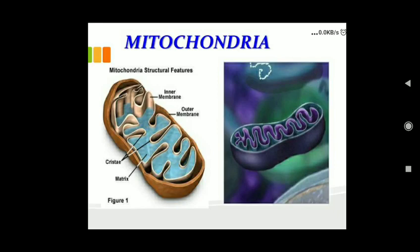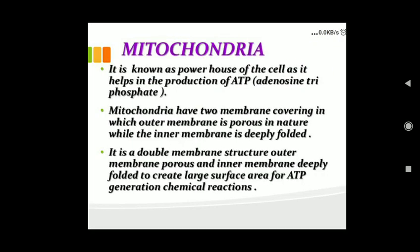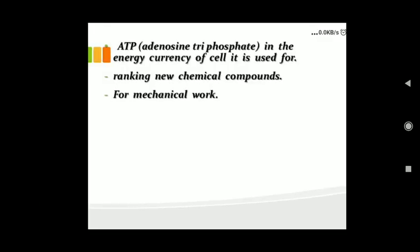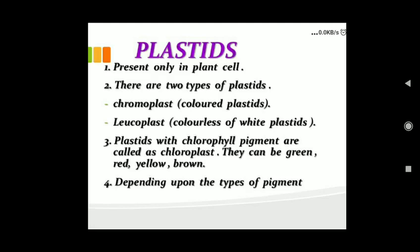That is why we call mitochondria the powerhouse of the cell. Mitochondria have their own DNA and genetic material, so other than the nucleus, mitochondria is another cell organelle that has its own genetic material — DNA — and also has ribosomes. Ribosomes are basically used for the synthesis of proteins.